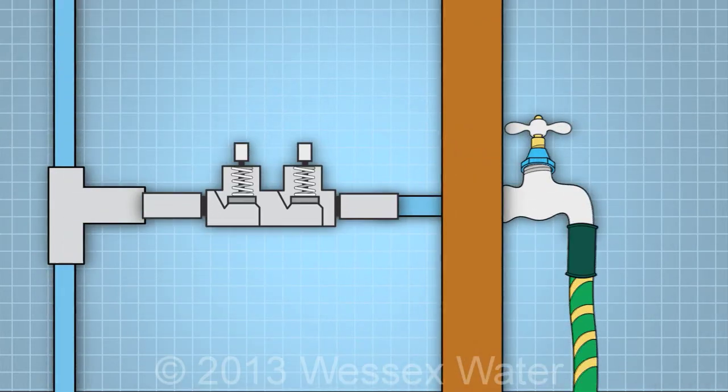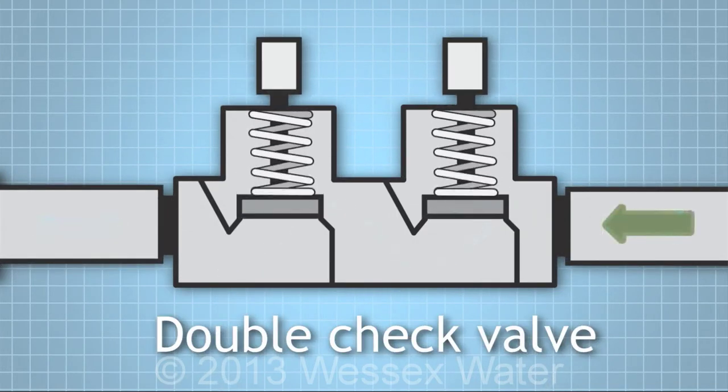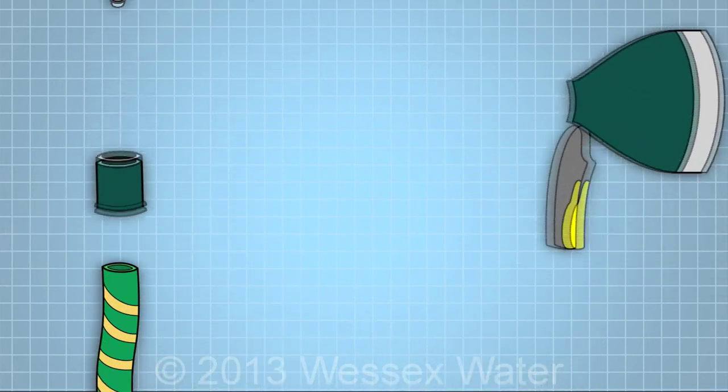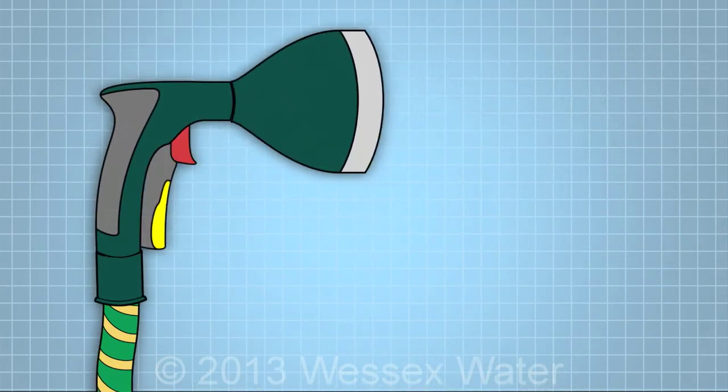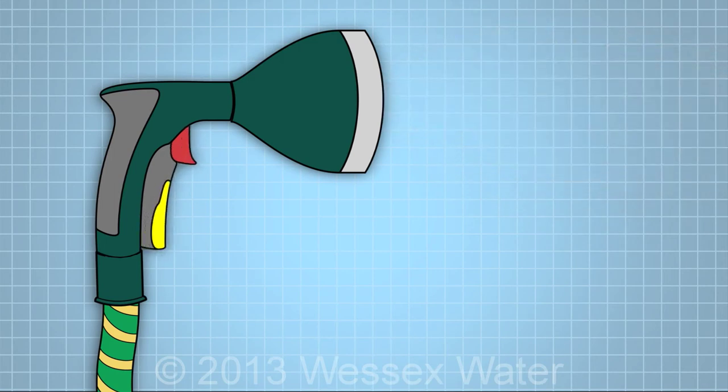When using an outside tap, attach a double check valve to a T-piece connection. It's also good to use a spray gun with a self-closing action when using an external tap to water your garden. It restricts the flow of water back through the pipe and helps to save water.